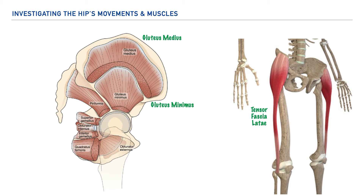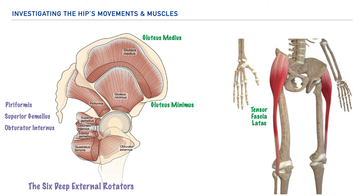We have a group of muscles called the six deep external rotators, and these muscles are considered to be posterior and lateral musculature of the pelvis and hip. These muscles include the piriformis, superior gemellus, obturator internus, inferior gemellus, quadratus femoris, and the obturator externus.